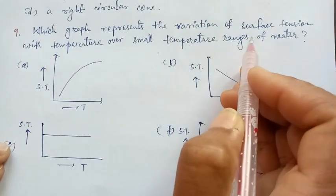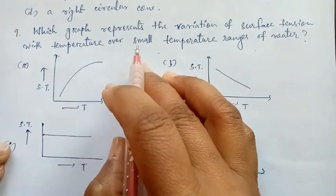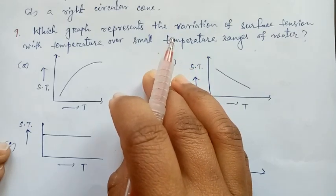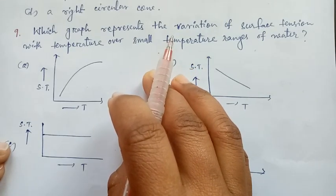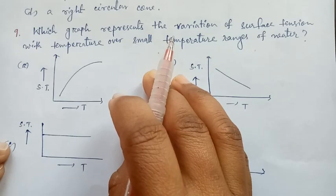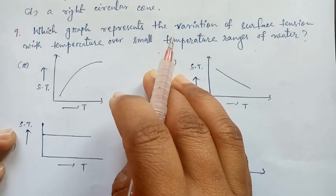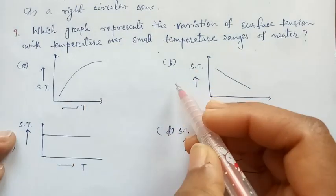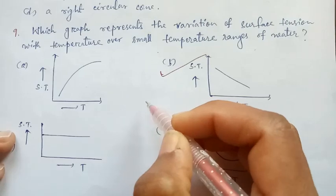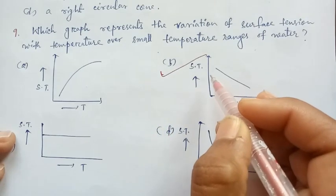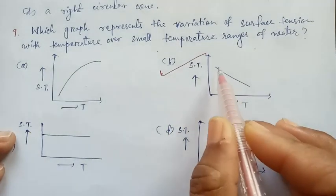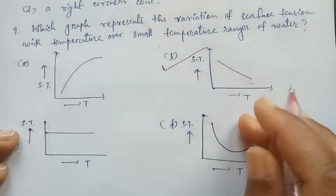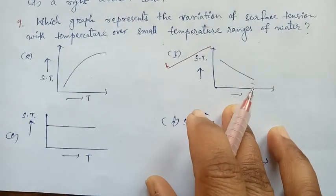Next: which graph represents the variation of surface tension with temperature over small temperature ranges of water? Over a small temperature range, the surface tension of water decreases linearly with rise of temperature. From the four graphs, option B is the correct answer, as surface tension decreases linearly with increase in temperature. Thank you, have a nice day.